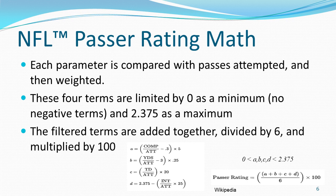Here is the math involved. We calculate four terms. The terms are then limited by 0 as a minimum — so no negative terms — and 2.375 as a maximum. These terms are then added together, divided by 6 — not 4, but 6 — and then multiplied by 100.